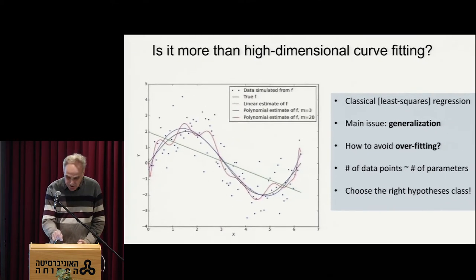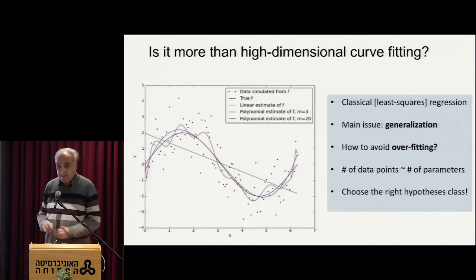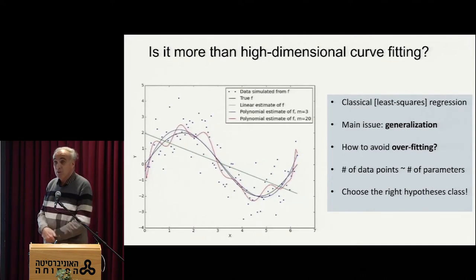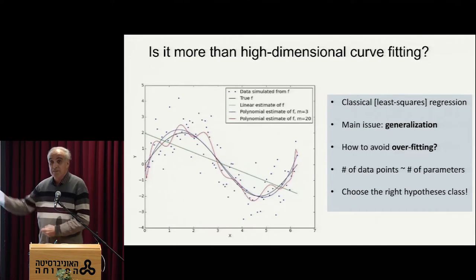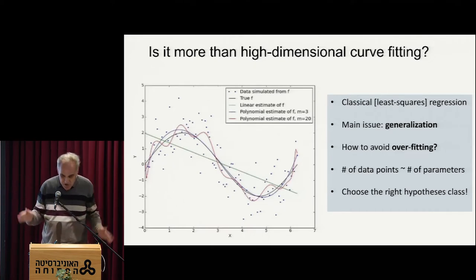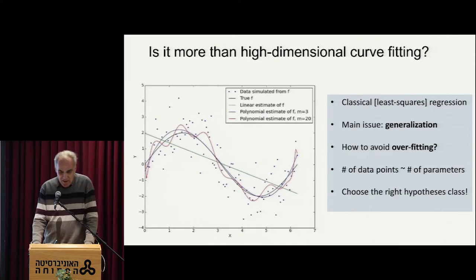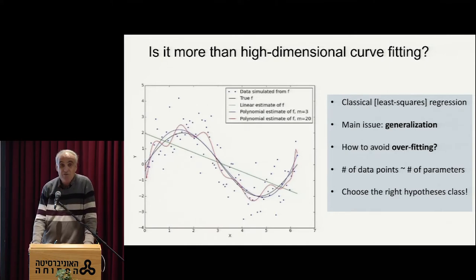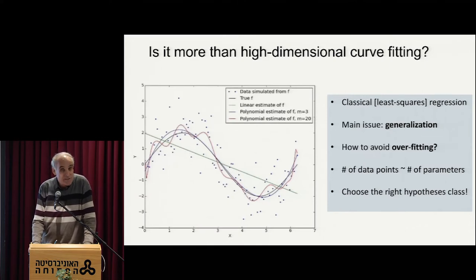We all know, at least since the 80s, that the issue is not fitting the data but what we call generalization — being able to predict points outside of your data. The main issue is generalization, and the question is how to avoid overfitting, which means how to avoid too complicated functions through your data.